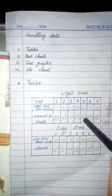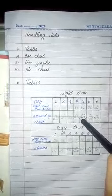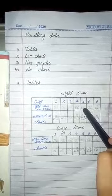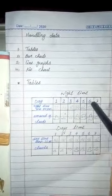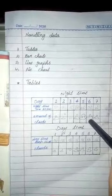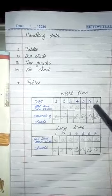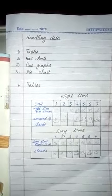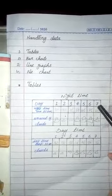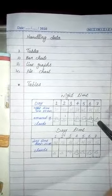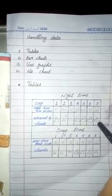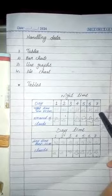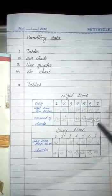On the fifth day, clouds and temperature also increased — temperature became 6 degrees centigrade. On the sixth day, amount of clouds increased and temperature became 7 degrees centigrade. On the seventh day, the amount of clouds decreased and temperature also decreased — it becomes 2 degrees centigrade.